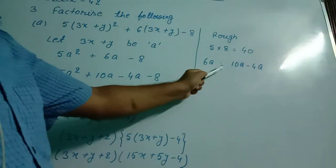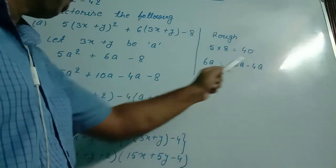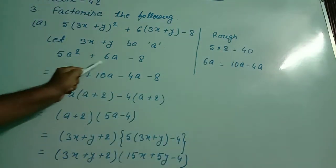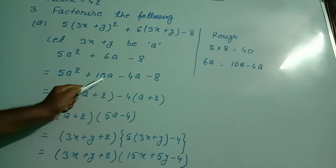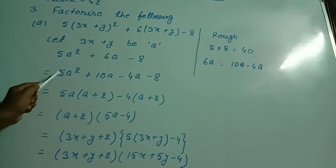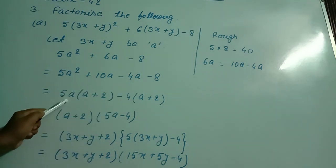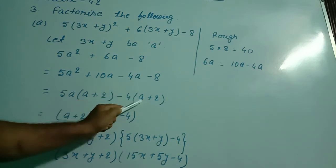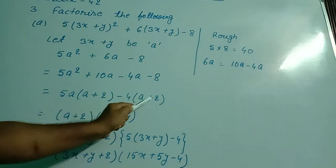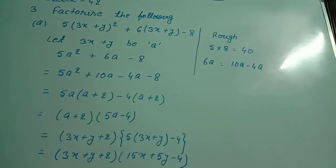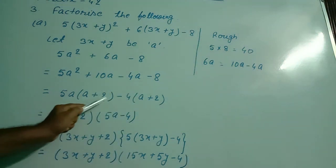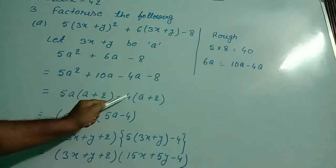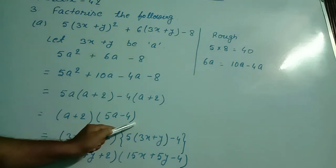For that, I wrote 6a equal to 10a minus 4a. So 10a minus 4a equals 6a, and 10 into 4 equals 40. We can write the given expression as 5a² + 10a - 4a - 8. From the first two terms I took 5a as common, so a is left and 2 is left. From the last two terms I took minus 4 as common, so a is left and plus 2 is left, giving a + 2 as common. I wrote (a + 2)(5a - 4).